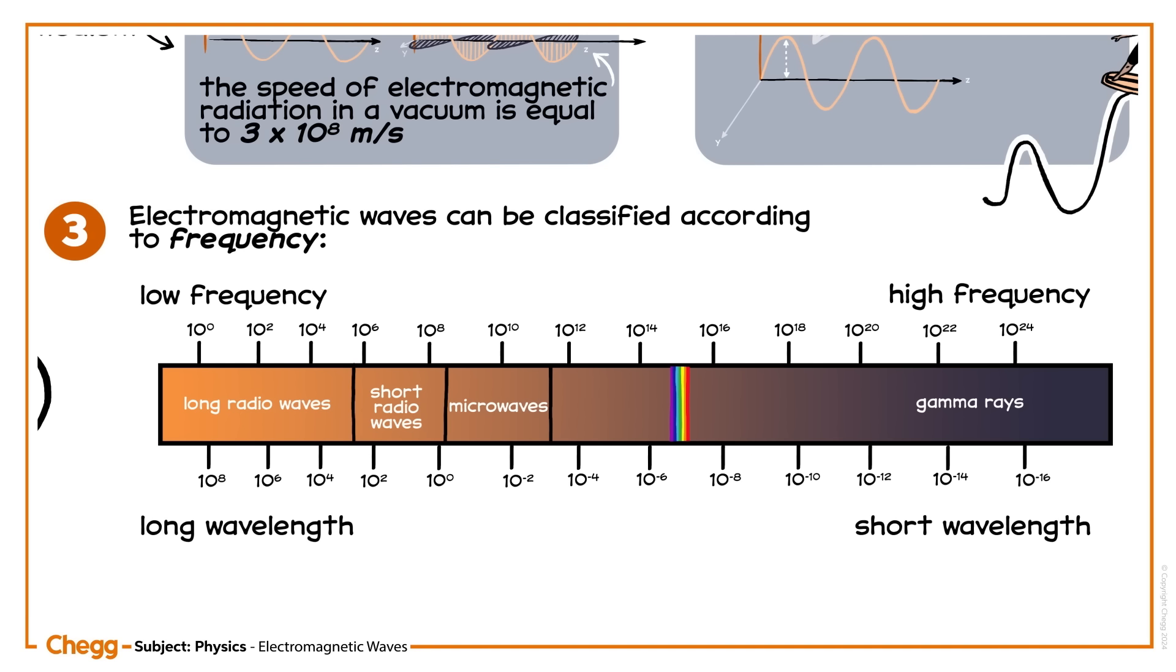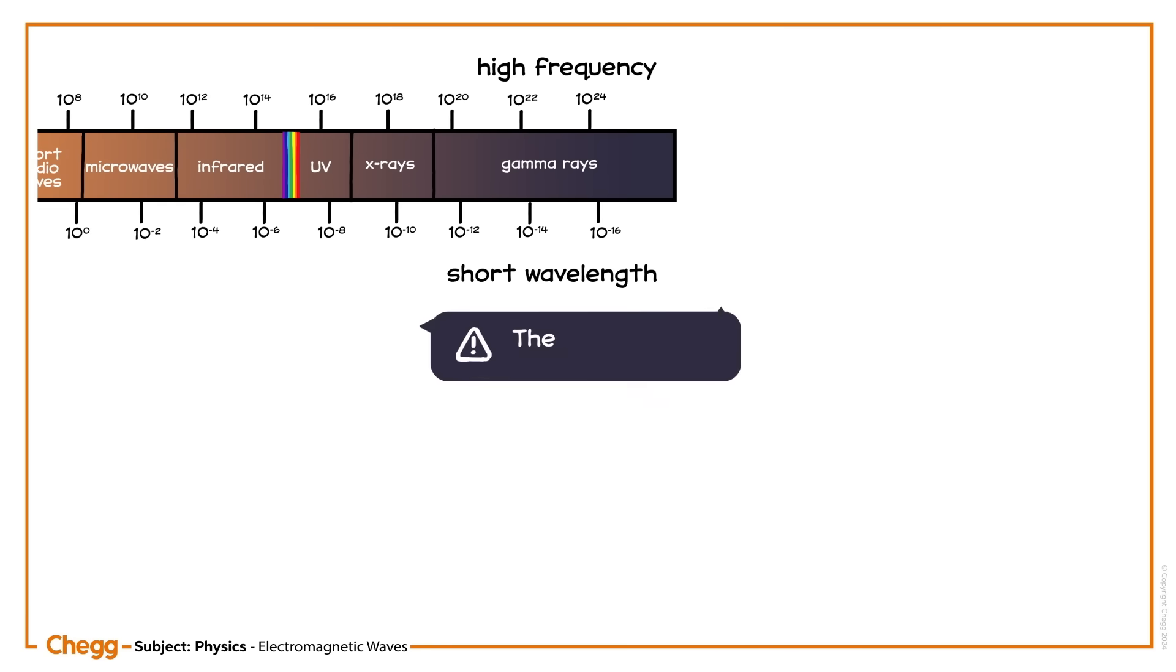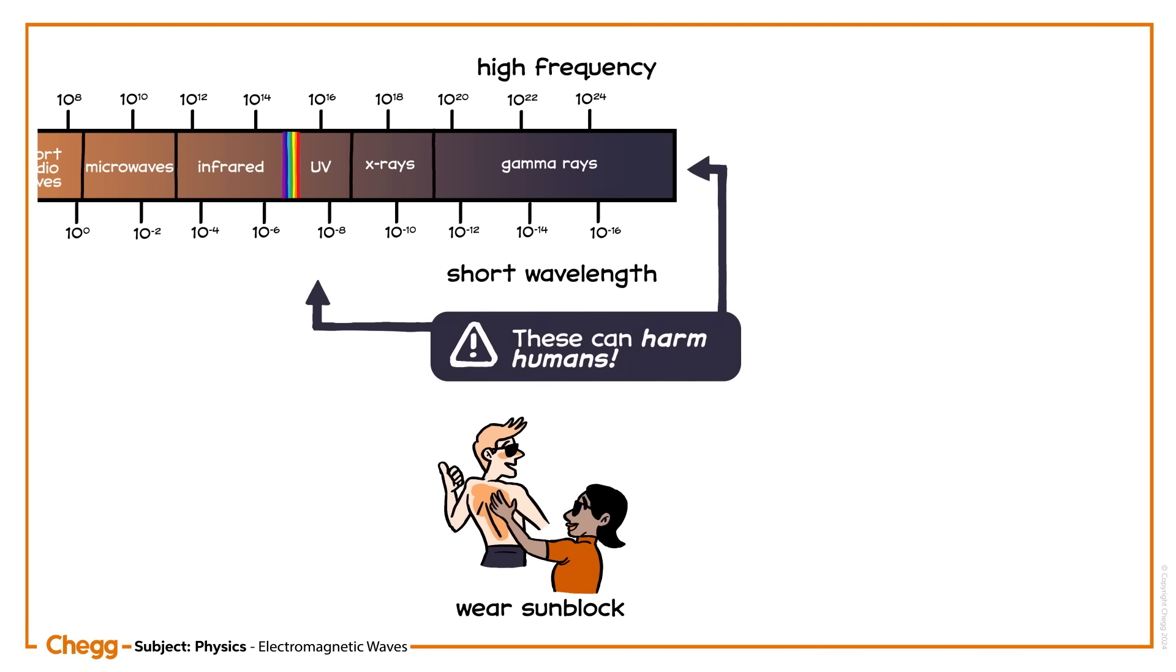On the right are higher frequency waves, like UV and infrared, and X-rays. Frequency is proportional to energy, so these waves are higher energy. These can harm humans, hence why it's important to wear sunblock, and why X-ray technicians wear protective equipment.